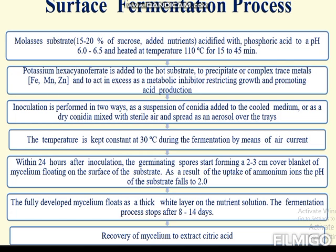Inoculation is performed in two ways: as a suspension of conidia added to the cold medium, or as dry conidia mixed with sterile air and spread as an aerosol over the trays. The temperature is then kept constant at 30 degrees Celsius during fermentation by means of air currents. Within 24 hours after inoculation, the germinating spores start forming a 2 to 3 cm blanket of mycelium floating on the surface of the substrate.